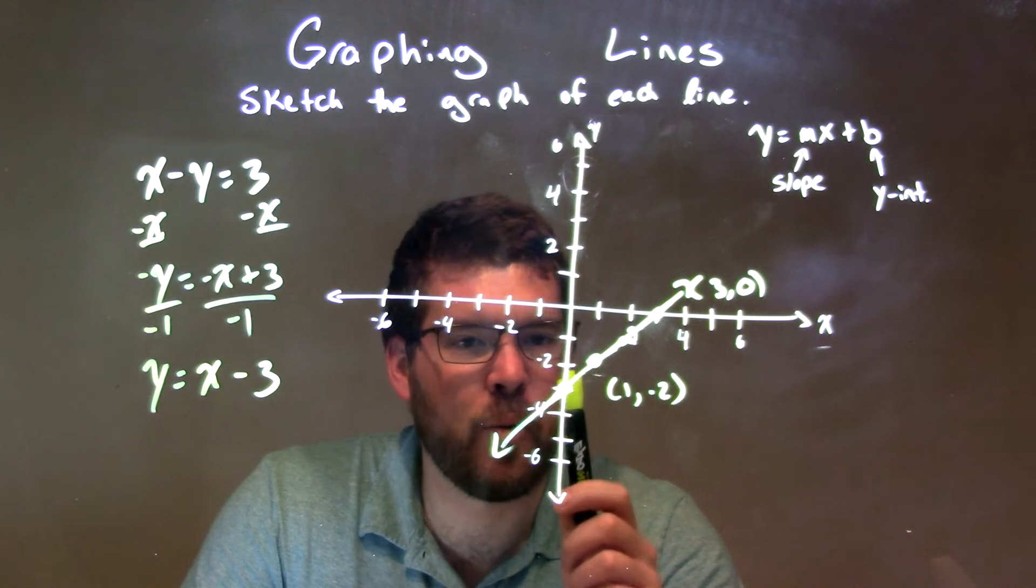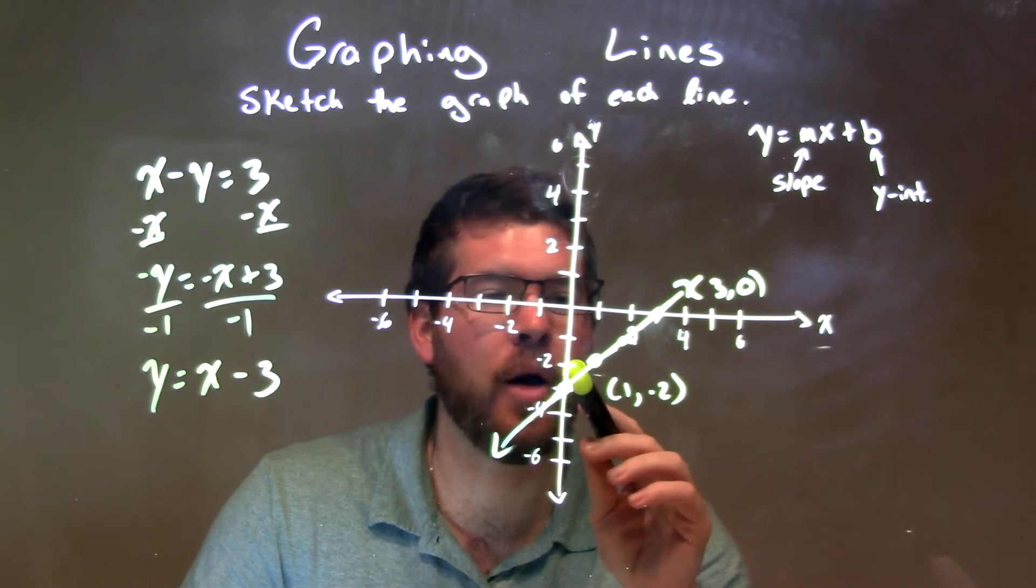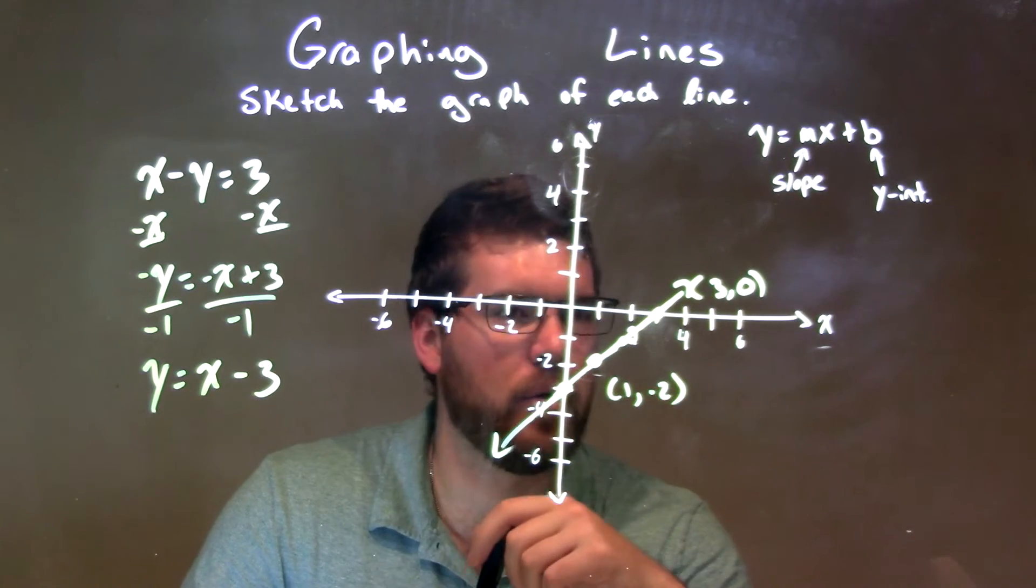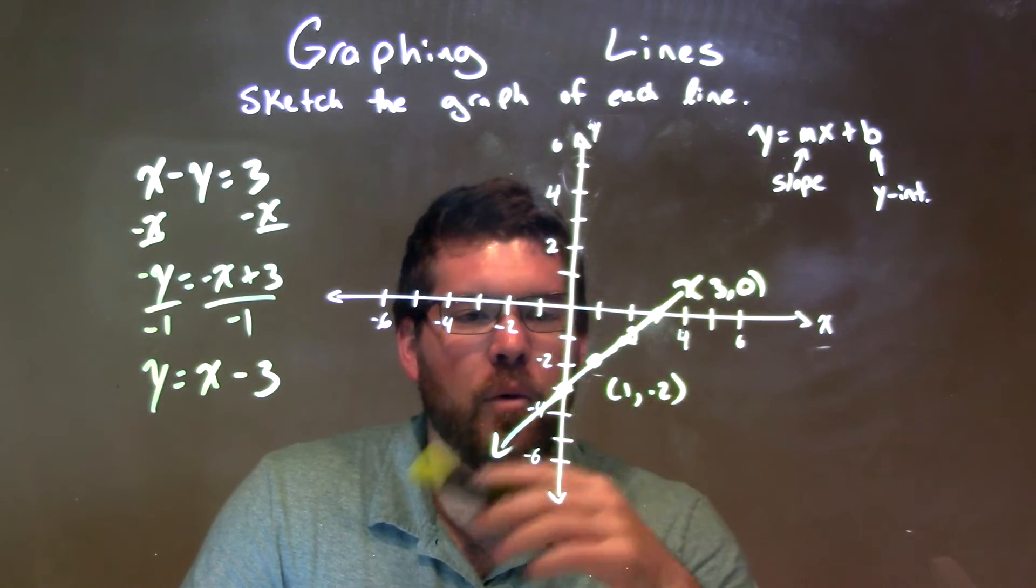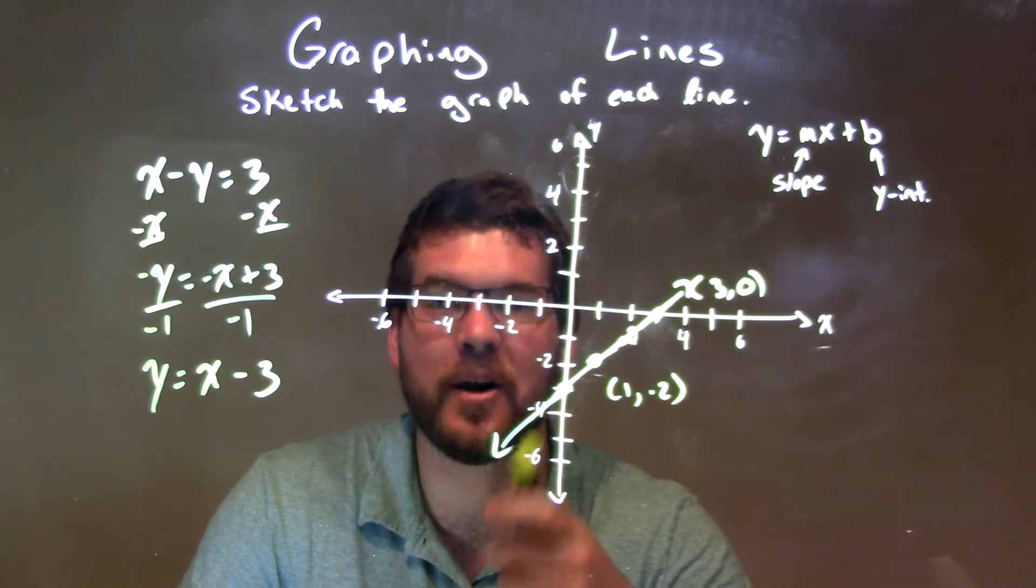Negative 3 is our y-intercept, so I put the point right here on the y-axis, and our slope is 1. So we went up 1, over 1 for each one of our points. We connected our dots, and now we have our line, our graph, and our final answer.